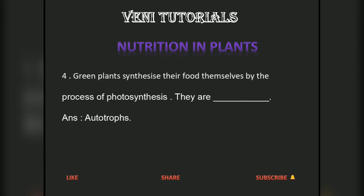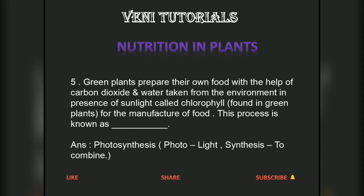Green plants synthesize their food themselves by the process of photosynthesis. They are autotrophs. Green plants prepare their own food with the help of carbon dioxide and water taken from the environment, in the presence of sunlight and chlorophyll for the manufacture of food. This process is known as photosynthesis.